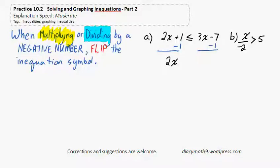Don't flip the sign, because we didn't multiply or divide. We are adding a negative or subtracting, however you want to think about it. So that gives us 2x less than or equal to 3x minus 8.